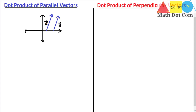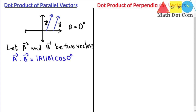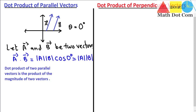Let's say the two vectors a and b are parallel to each other as shown in the given figure. The angle between them will be zero, that is theta equals zero degrees. So the dot product formula gives us: a dot b equals the magnitude of a times the magnitude of b times cos of zero degrees. Since cos(0°) = 1, the dot product of two parallel vectors is simply the product of their magnitudes.